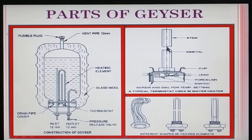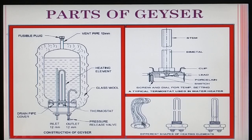After the contacts close, the heating resumes. When the thermostat opens, the heat is cut off. There are different shapes of heating elements: spiral shaped, twisted shape, U-shape, and circular shape.